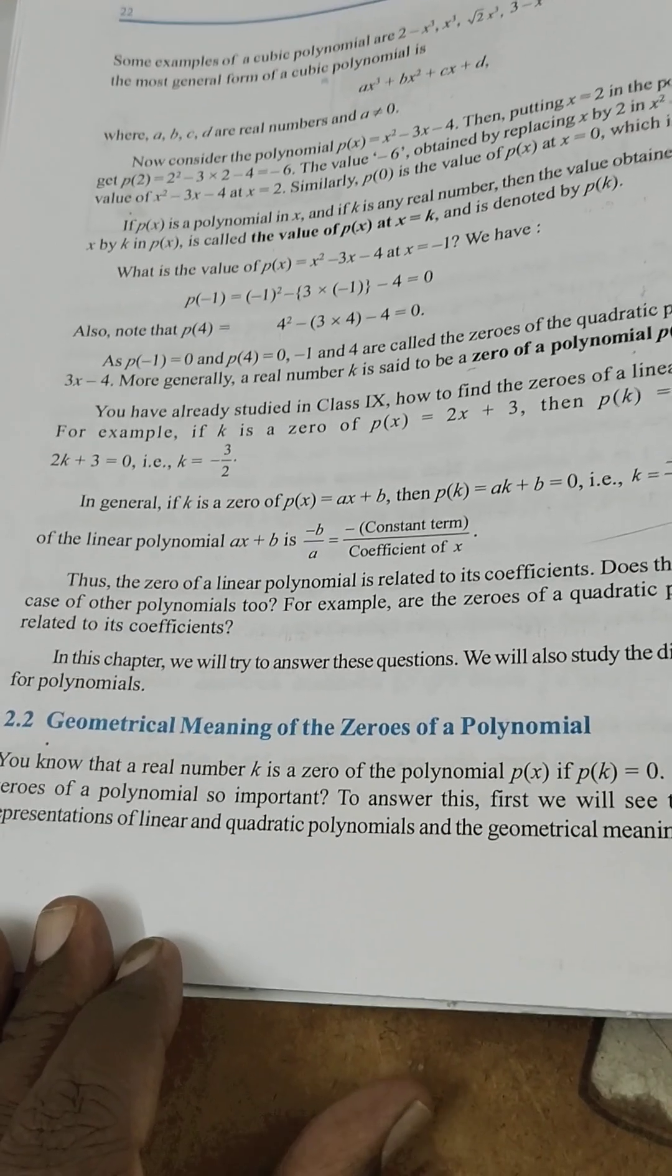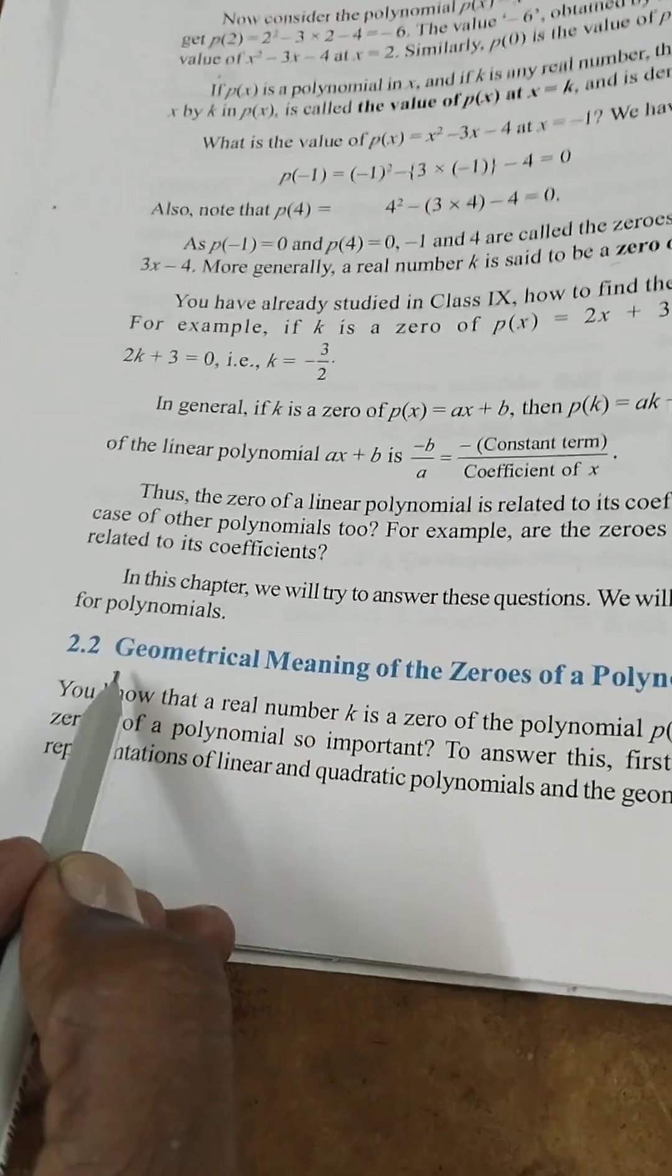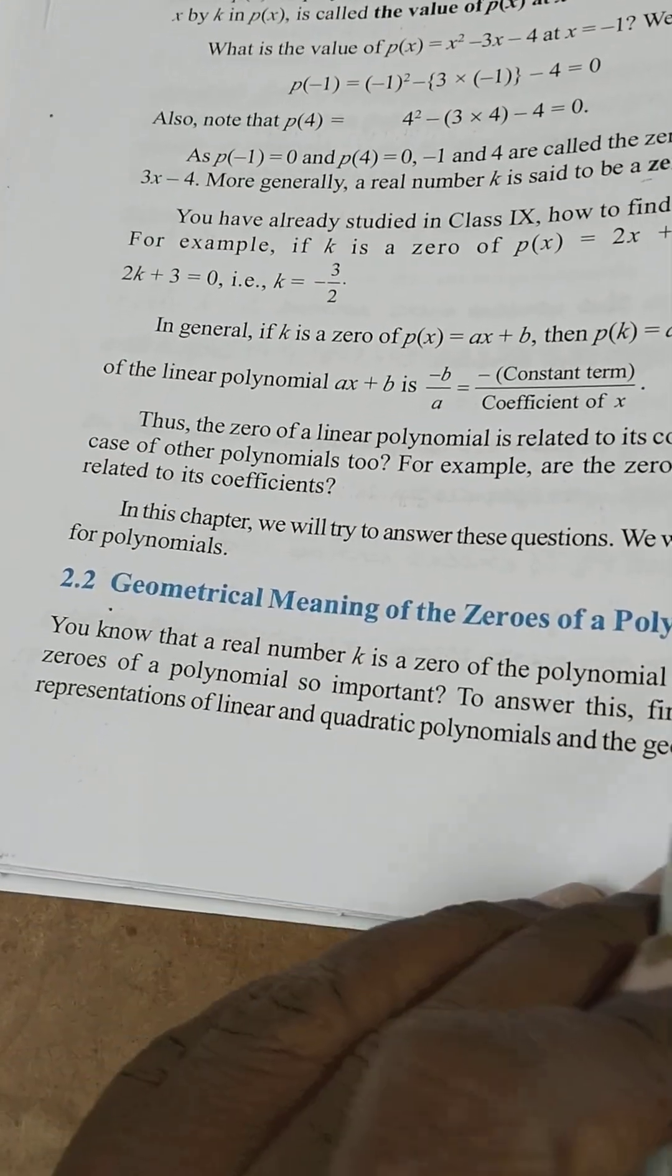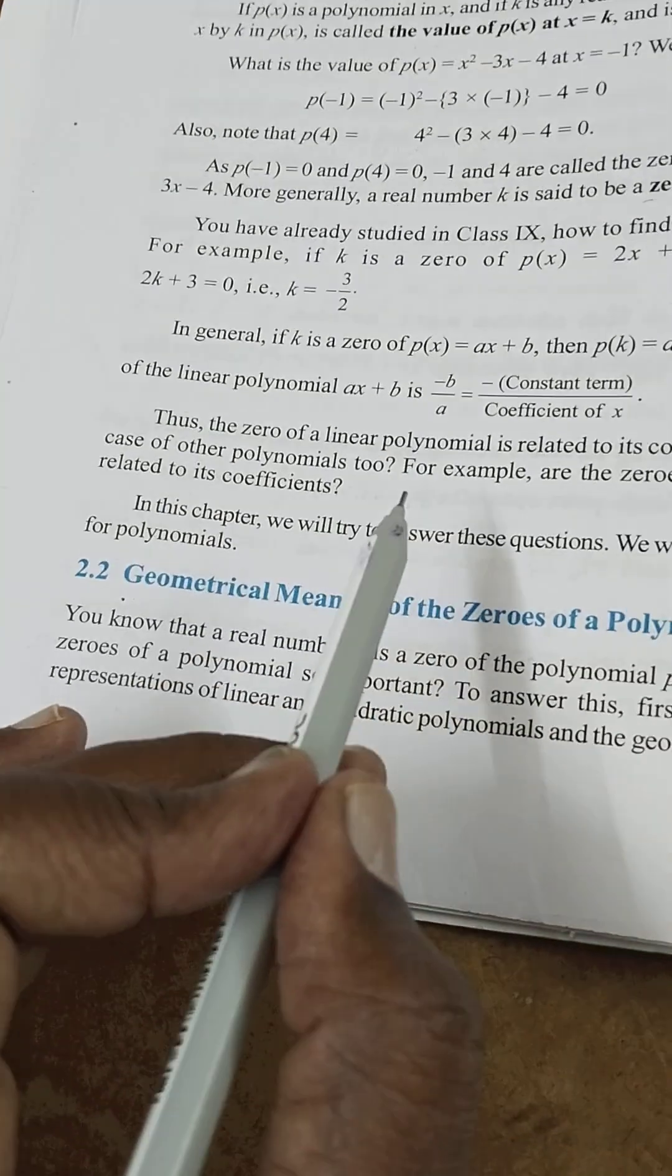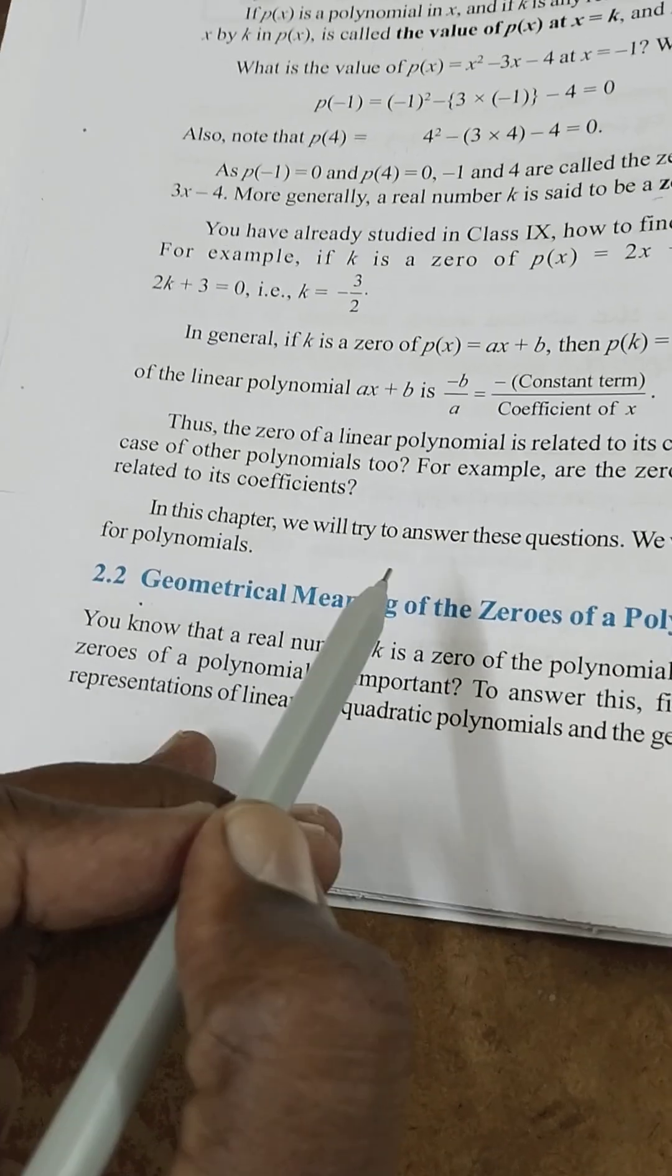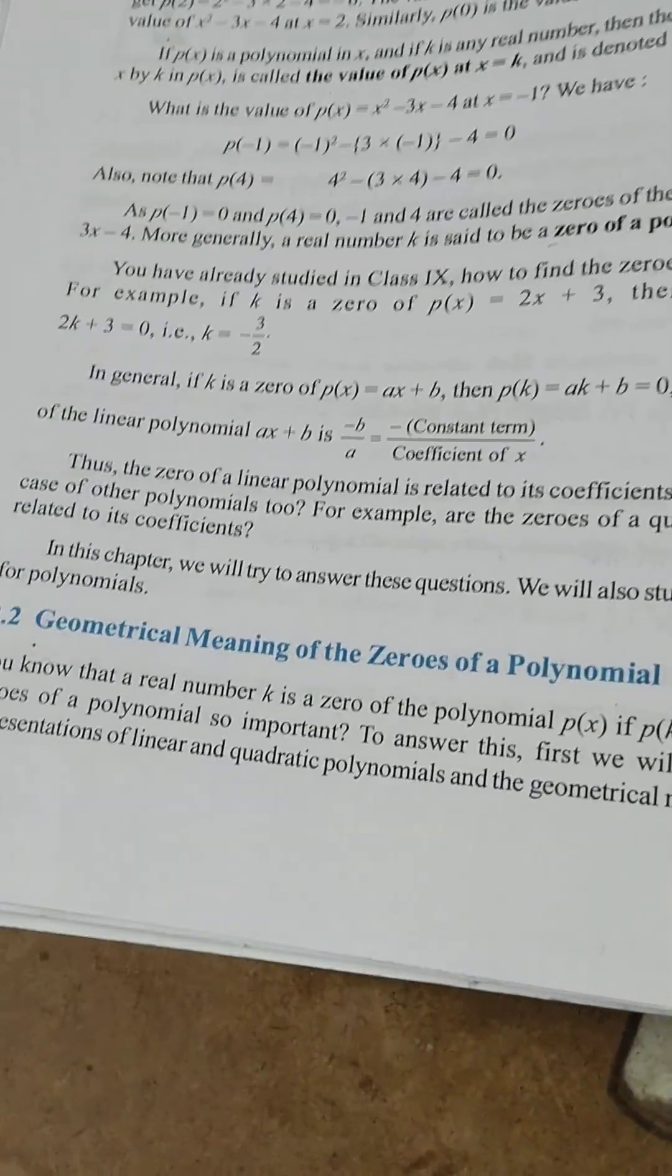Today we are going to discuss geometrical meaning of the zeros of a polynomial. To find the zero of a polynomial, we set p(x) equal to zero.